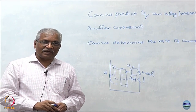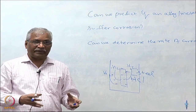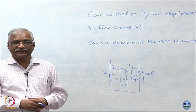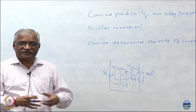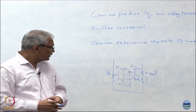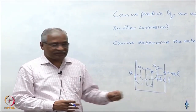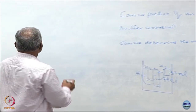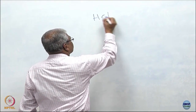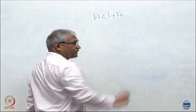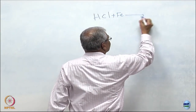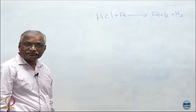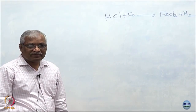We have seen in the last class that corrosion is oxidation of metals, and at the same time there has to be a reduction reaction. The electrons liberated during the oxidation process need to be accepted by some species. So there is an oxidation process and a reduction process. Let us write this corrosion process as a chemical equation.